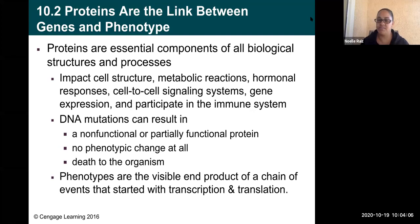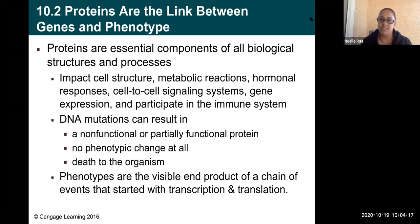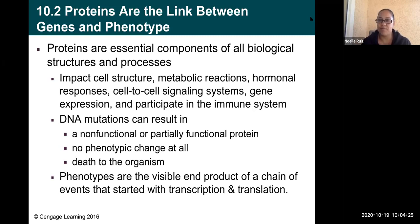Phenotypes are the visible end product of a chain of events that started with transcription and translation. Last chapter, we went through transcription and translation — the DNA gets transcribed into RNA and the RNA gets translated into a protein. Now that we have that protein, what does our body do with it?